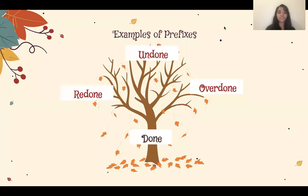Some of the most common prefixes are re, un, and over. Let's look at how different prefixes can change the meaning of a word. At the base of this tree we have the word done. We can see how adding the different prefixes at the branches of the tree change the meaning of the word done.